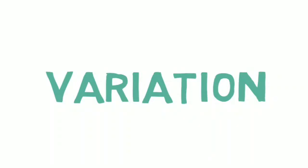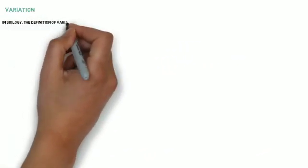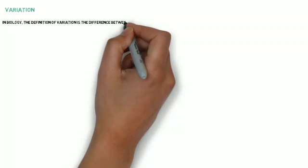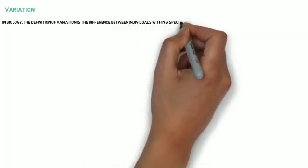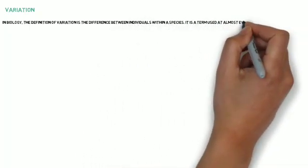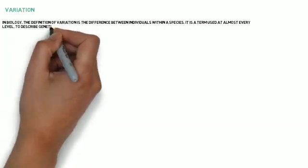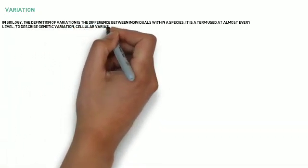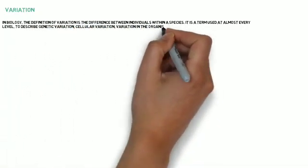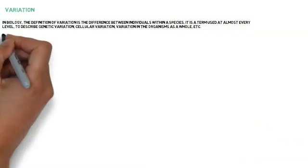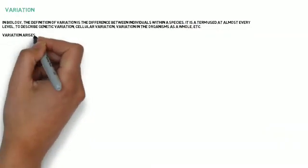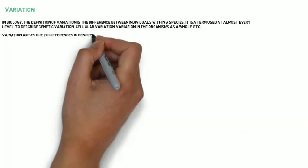Variation. In biology, the definition of variation is the difference between individuals within a species. It is a term used at almost every level to describe genetic variation, cellular variation, variation in organisms as a whole, etc. Variation arises due to differences in genotype and environment.